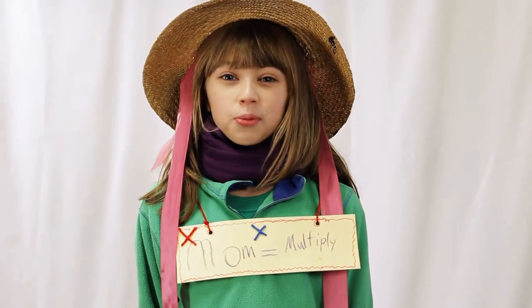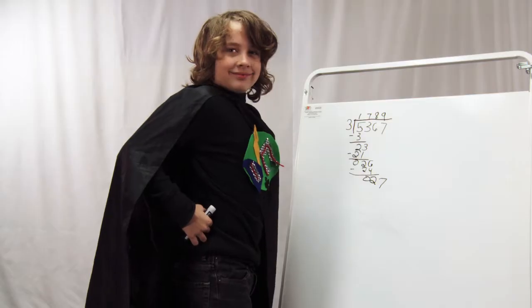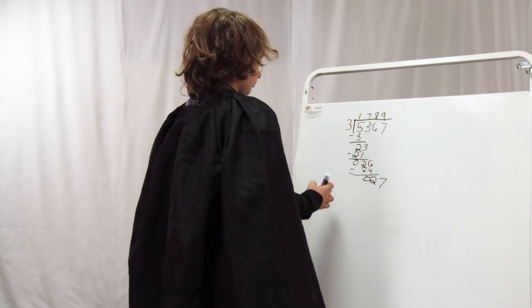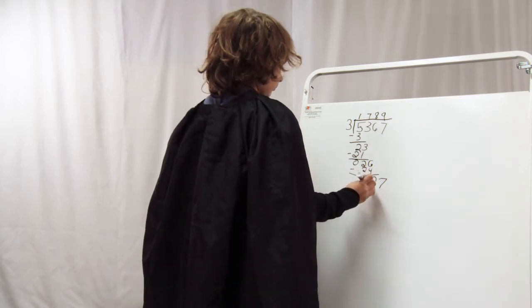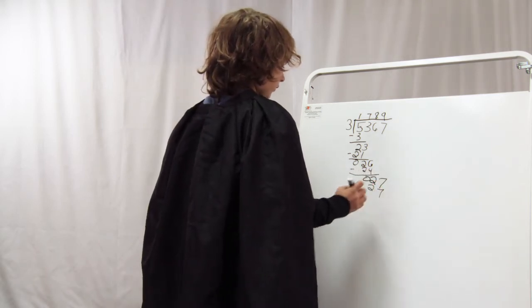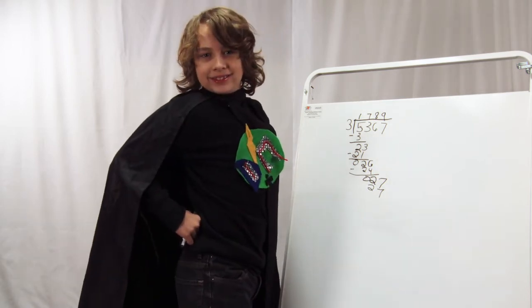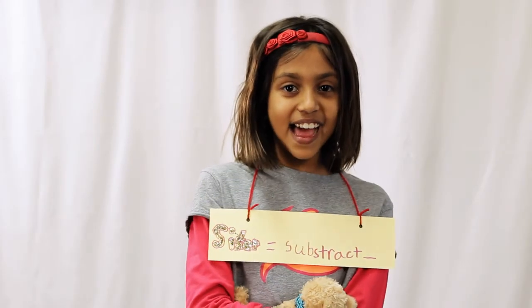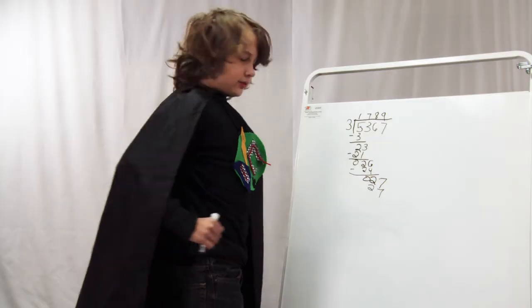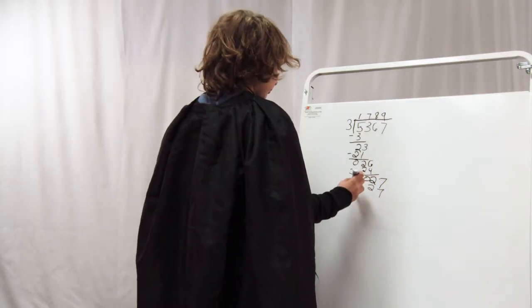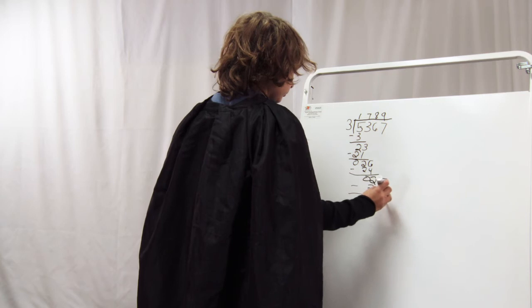Now we multiply! Three times nine is twenty-seven. Now we subtract! Twenty-seven minus twenty-seven is zero.